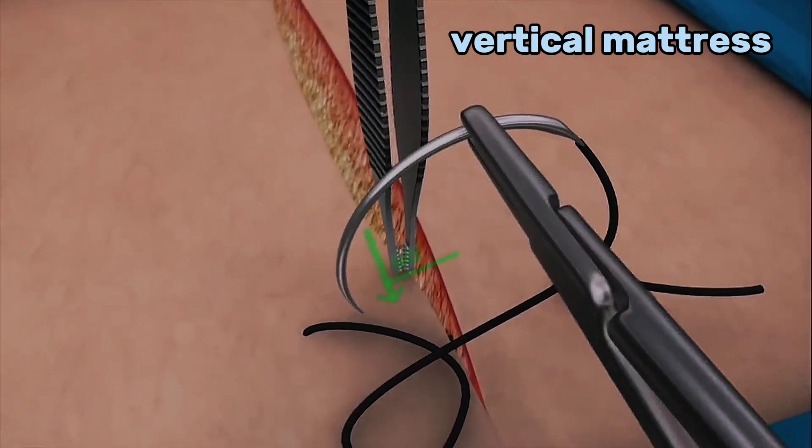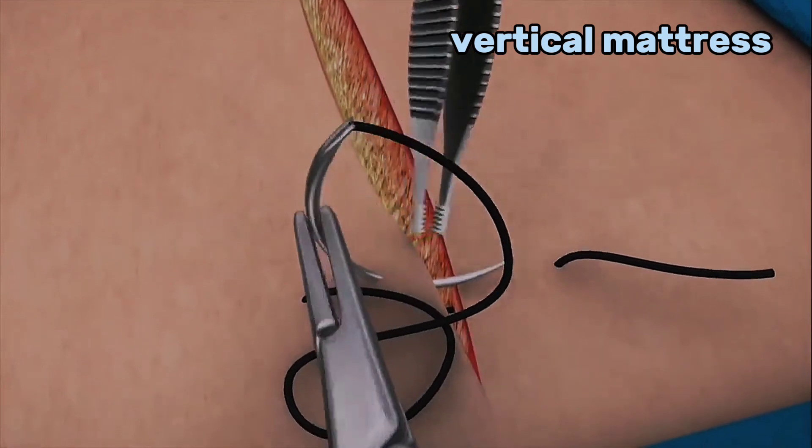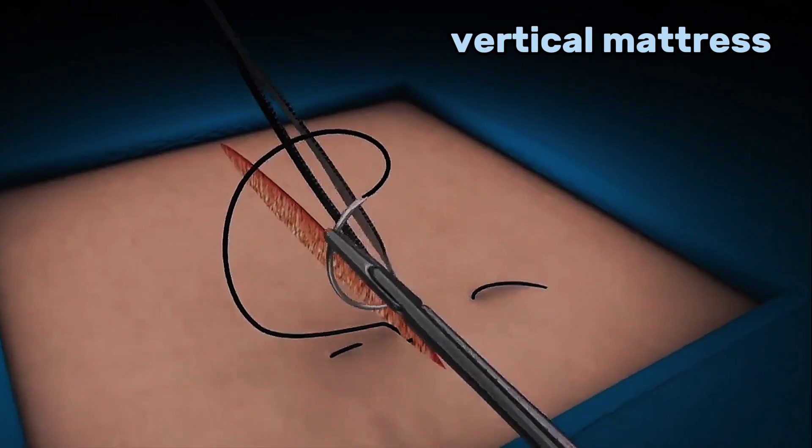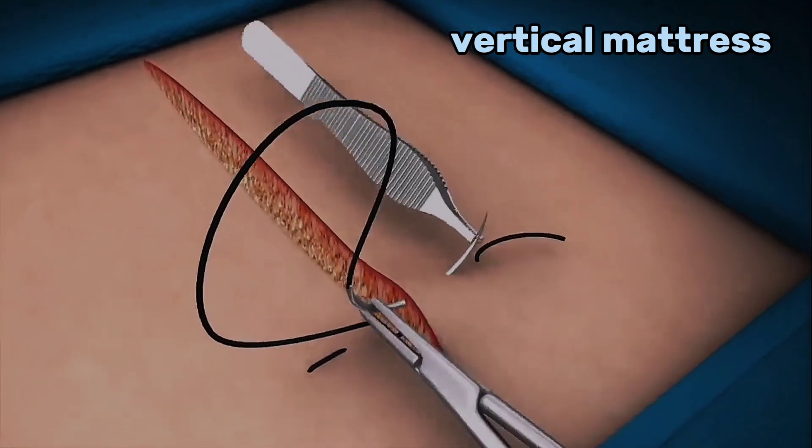Using the backhand technique, enter the needle at 90 degrees to the skin and rotate the needle through the tissue by pronating the forearm. Repeat on the opposite side of the wound from inside to outside.